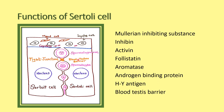The blood-testis barrier is formed by two Sertoli cells connected by tight junctions. It prevents toxic substances produced during spermatogenesis from entering the circulation. The tight junctions allow mature sperm to move from the basal compartment to the adluminal compartment. The blood-testis barrier is important for spermatogenesis, and Sertoli cells also maintain the tubular fluid concentration.